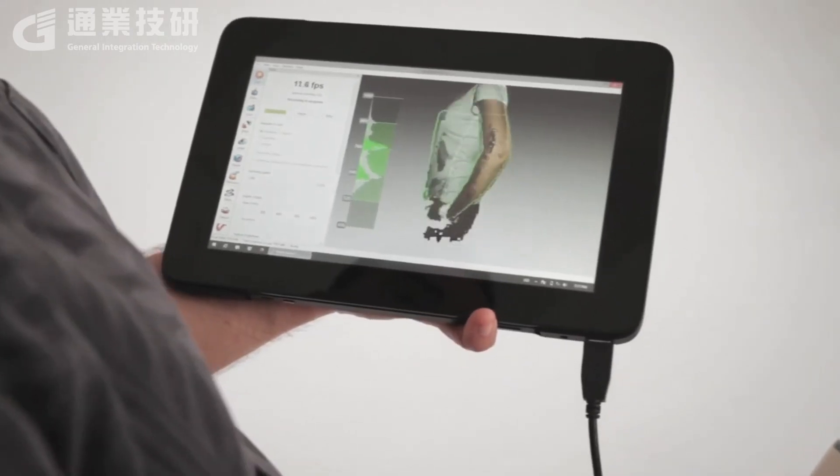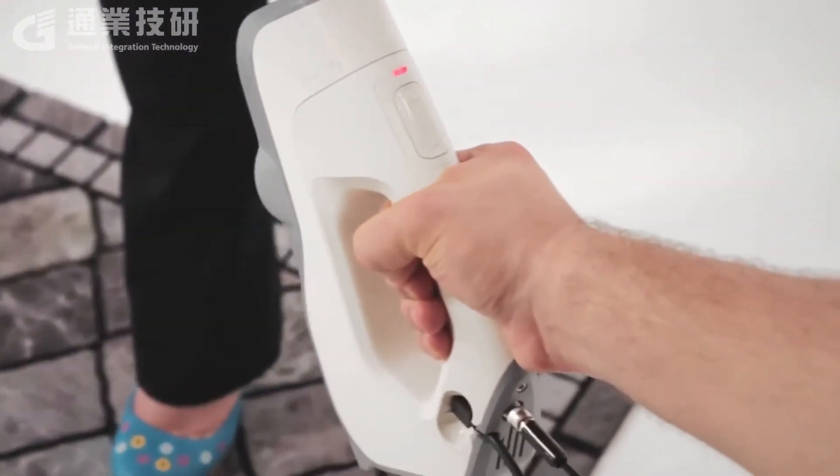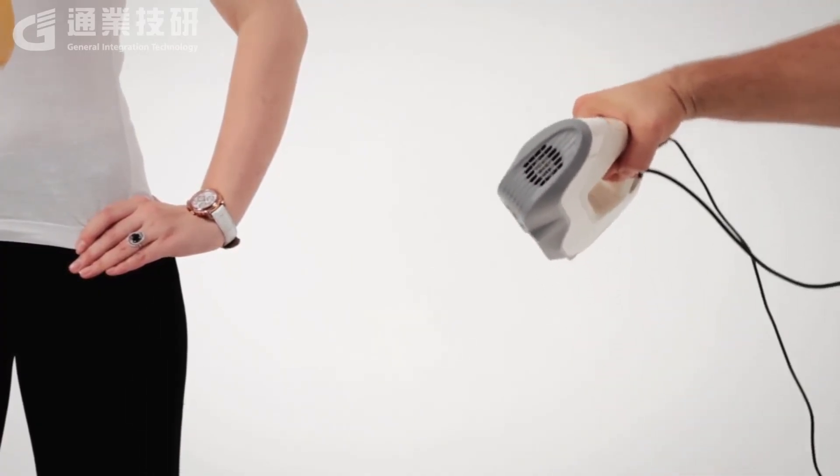After this, you can go on to scanning the legs. Always remember, to get a good scan, you must change the angles of the scanner so it sees the person from every perspective.